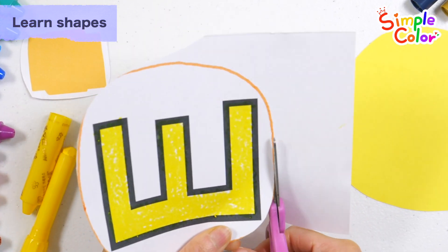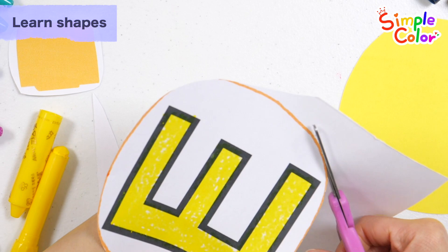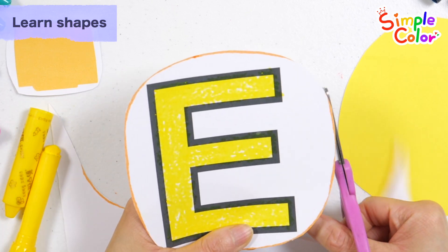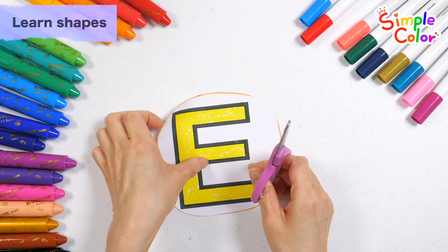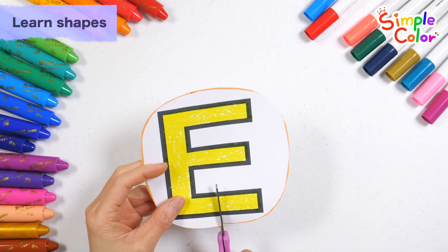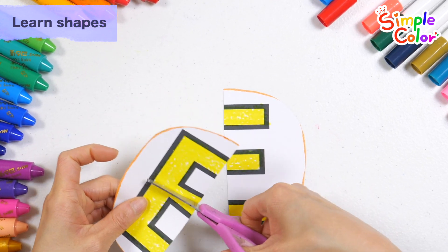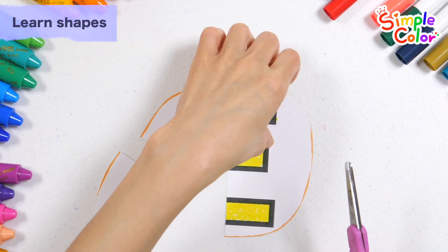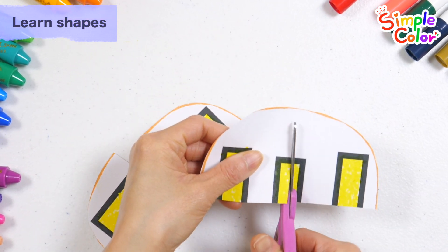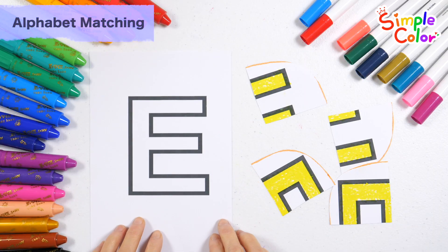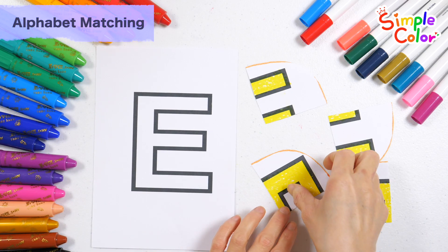Now I know my ABCs. Next time won't you sing with me? Shall we make the circle into four pieces? Let's put the alphabet pieces back in place.